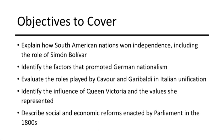Meanwhile in Italy, the unification of Italy in the 19th century was a complex process shaped by the strategic brilliance of Cavour and the revolutionary fervor of Garibaldi. Cavour's diplomatic finesse and Garibaldi's military exploits were pivotal in orchestrating the amalgamation of disparate Italian states into a unified nation.